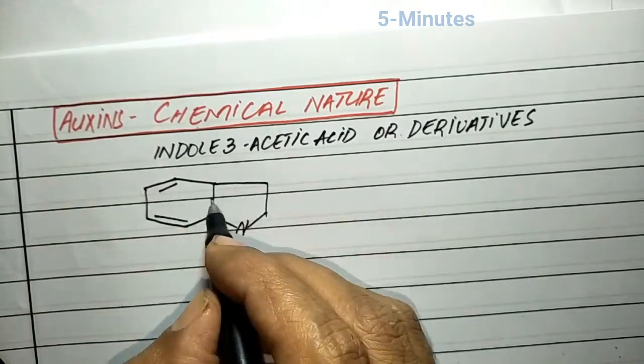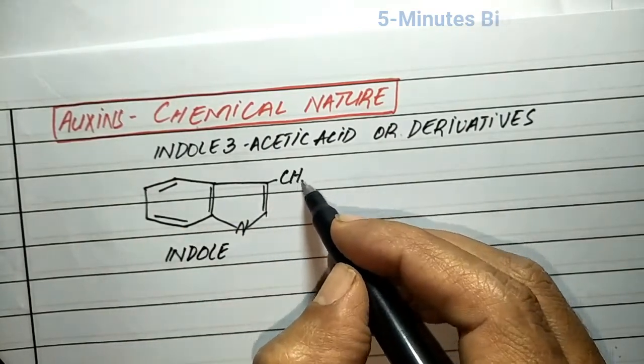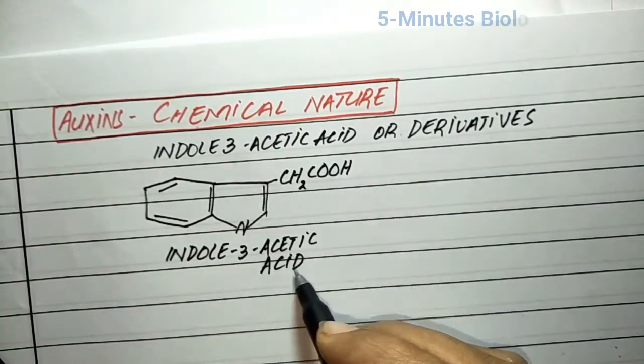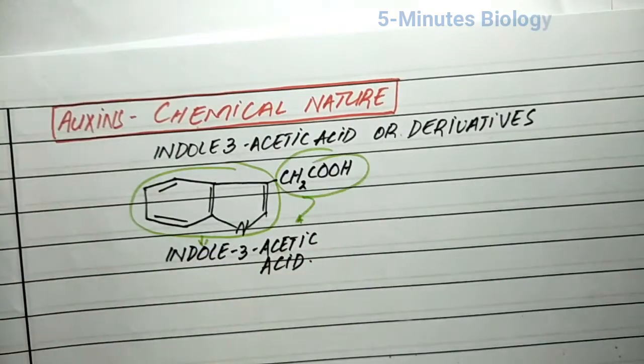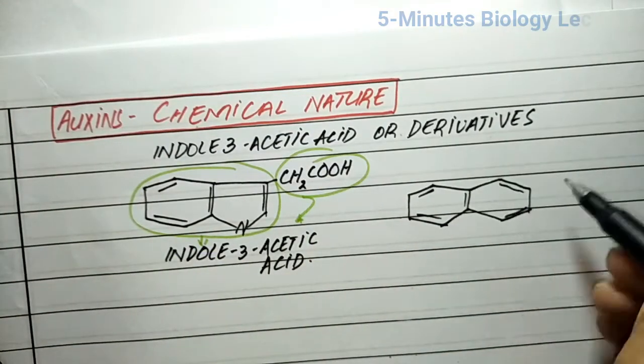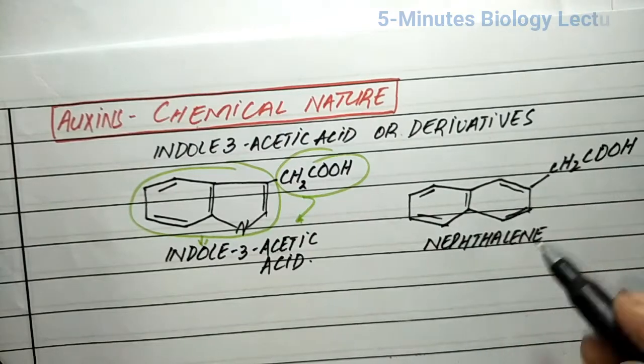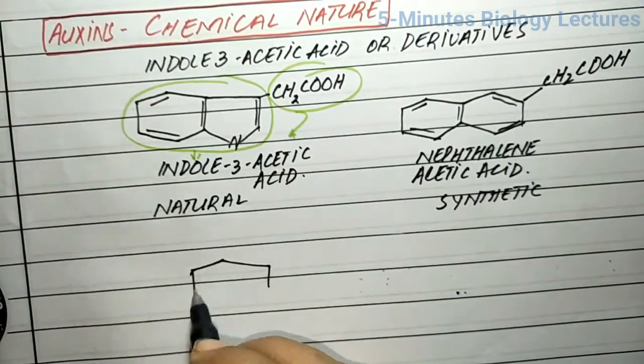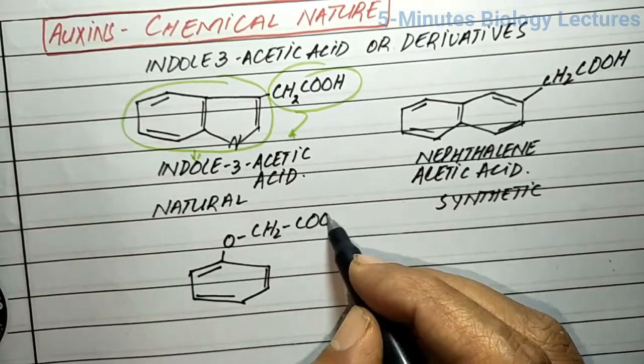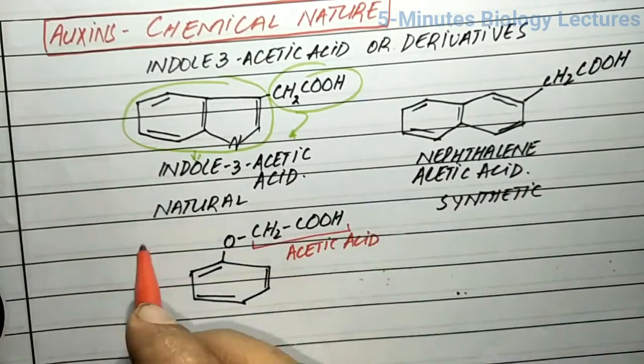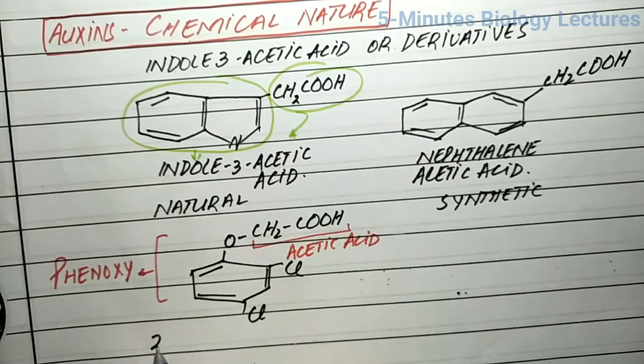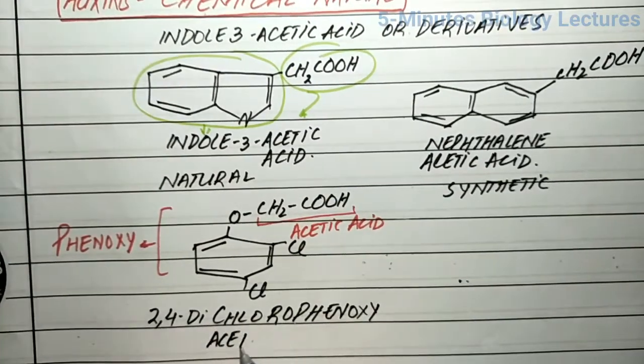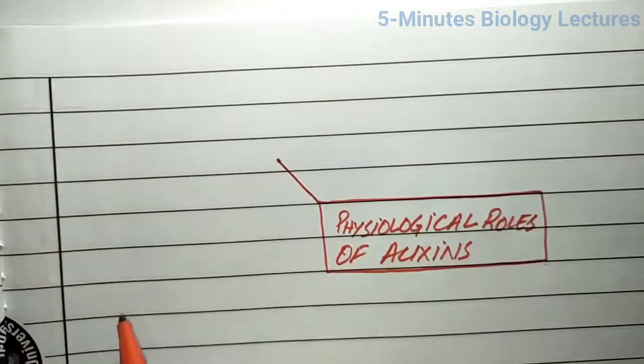Indole is a double-ringed molecule—one six-cornered ring and the other a five-cornered ring with nitrogen—and a molecule of acetic acid attached at the 3-position of the indole ring. Another important example of auxin is naphthalene acetic acid, which is synthetic, and 2,4-D or 2,4-dichlorophenoxyacetic acid, which is also a synthetic auxin.